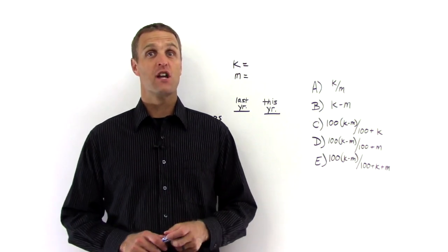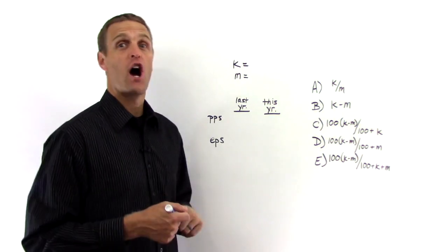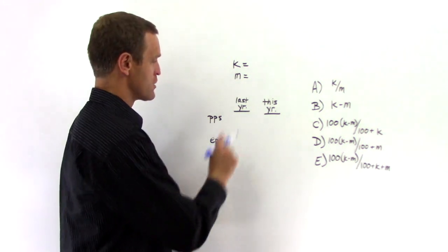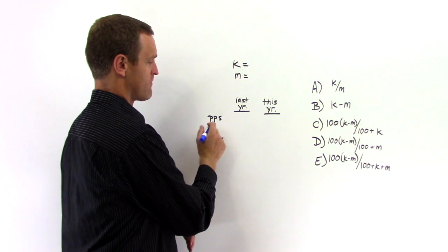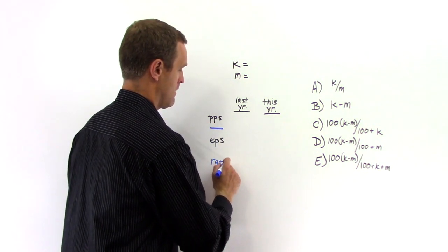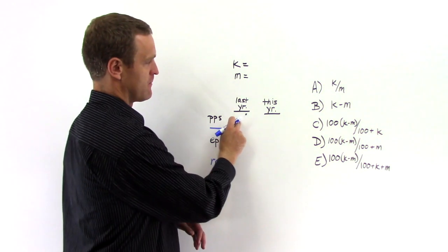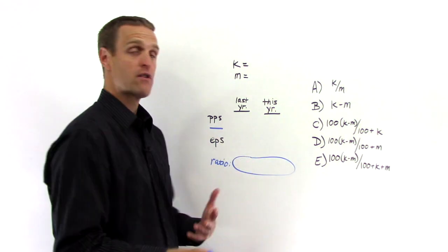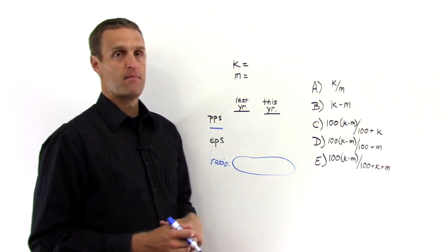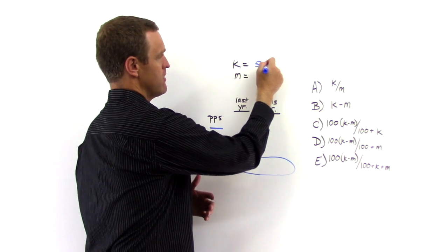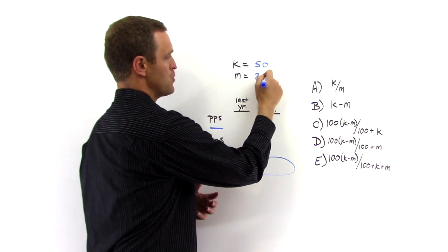Here we have a percent change question, but a percent change of what? Of a ratio to another ratio. In other words, they want the ratio of price per share to earnings per share to be compared from last year to this year. So we need to figure out these numbers here. And the best way to do that is to make up numbers. So what is the K percent increase? As long as K is greater than M, you can make up any numbers you want.